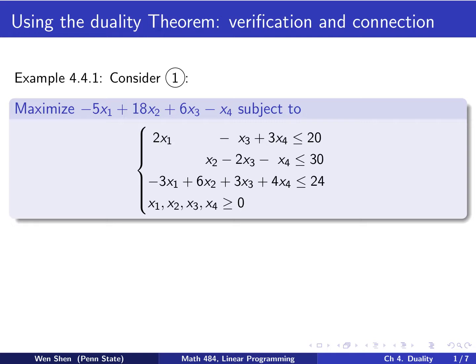Our first example is from the textbook, example 4.4.1. Consider the following problem, we call it problem 1. It's a maximization problem of this objective function, subject to three constraints, and I have four variables.